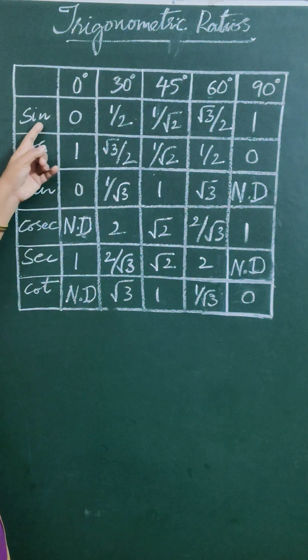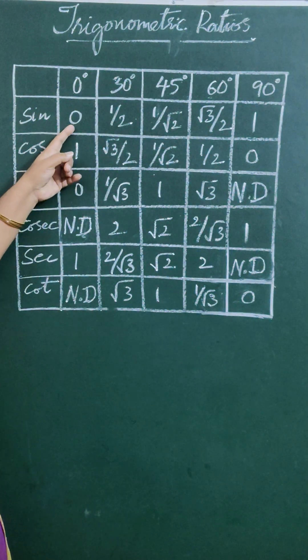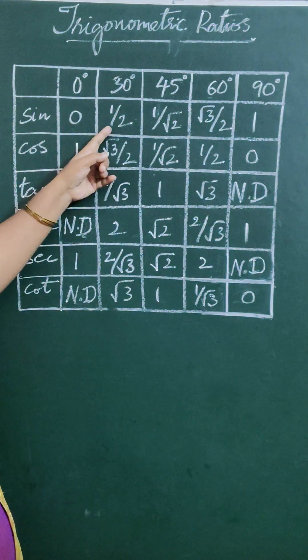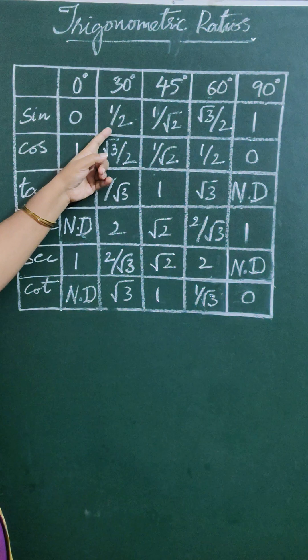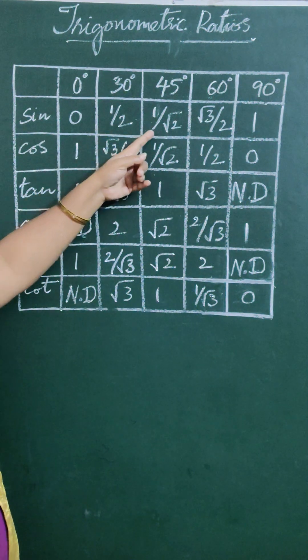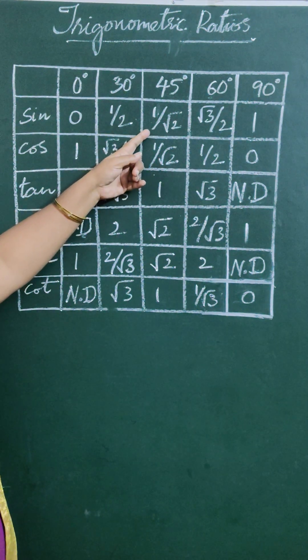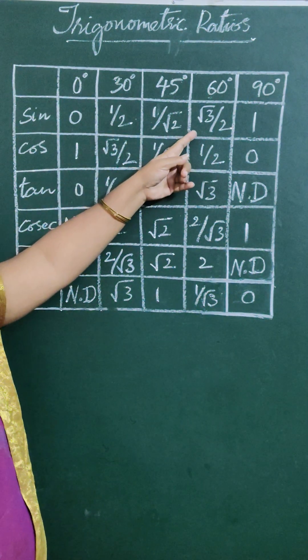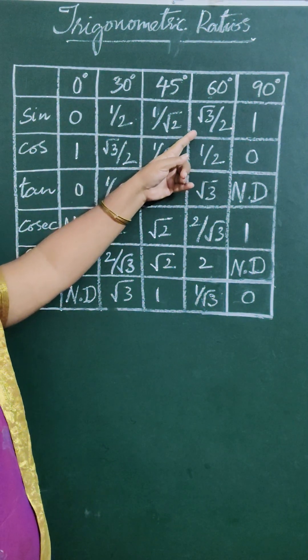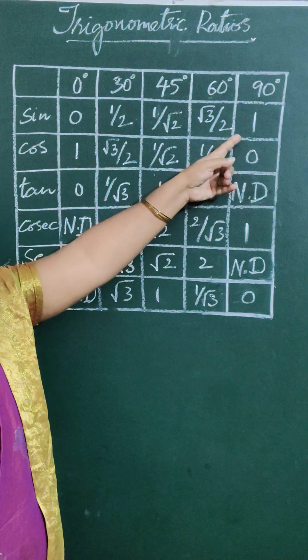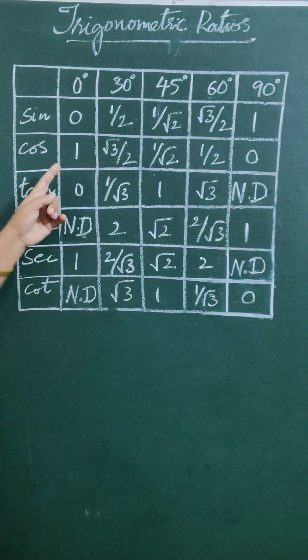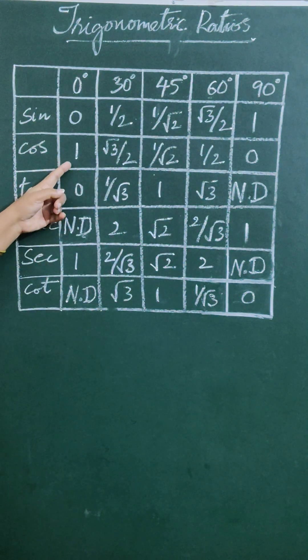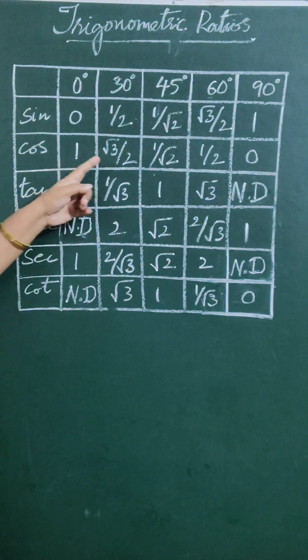Trigonometric ratios: sin 0° = 0, sin 30° = 1/2, sin 45° = 1/√2, sin 60° = √3/2, sin 90° = 1.